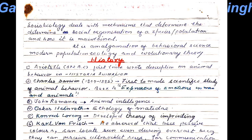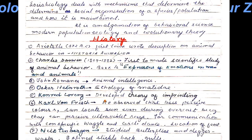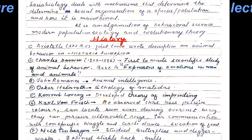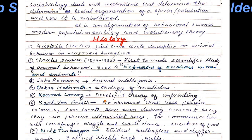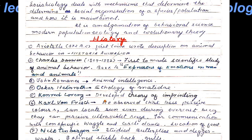Let us go to some history of this comparatively newer discipline — ethology. Aristotle, long back in 372 BC, first described animal behavior in Historia Animalium.